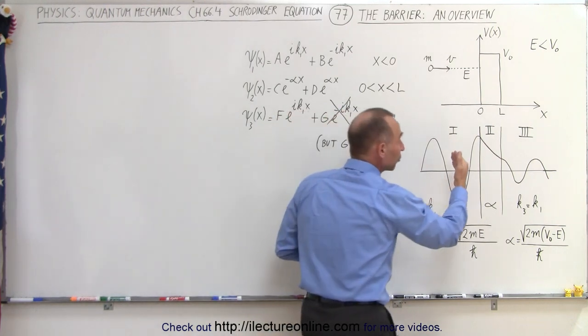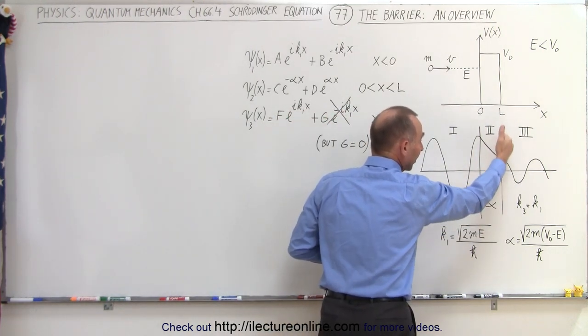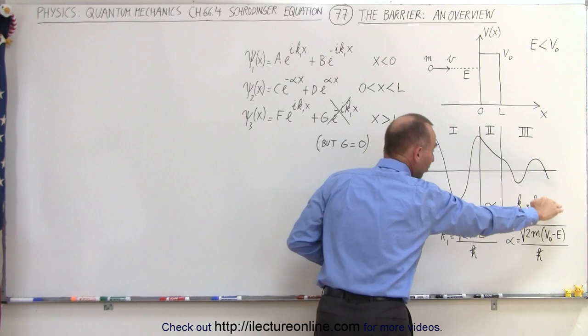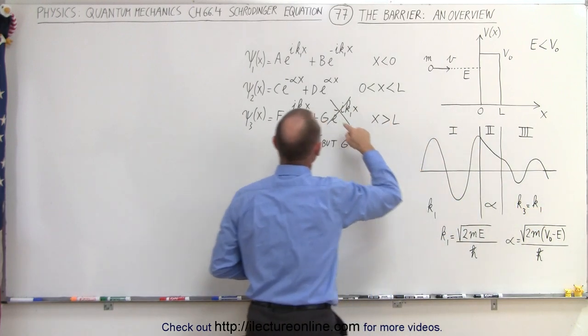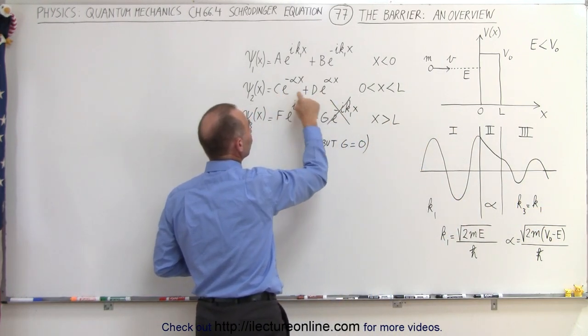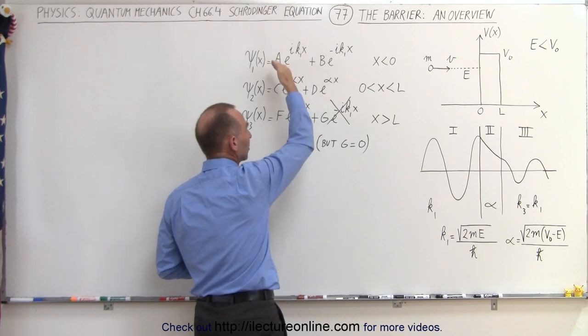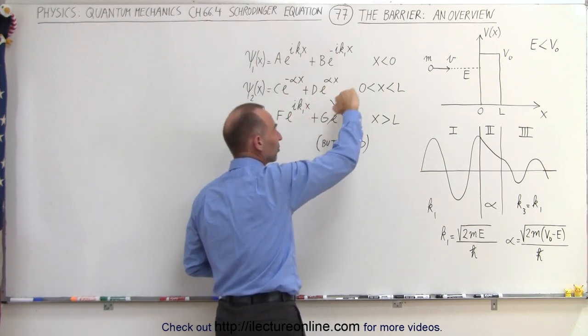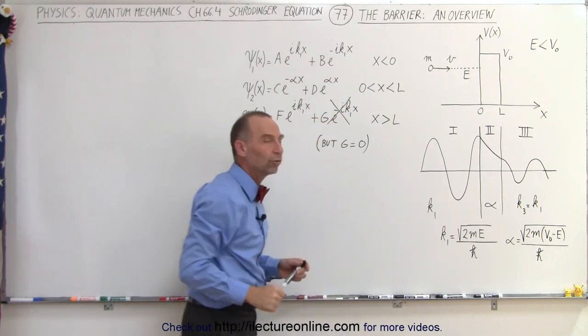Which also means that any particles reflected off the back side of the barrier here, when they go in the other direction, there'll be an exponential increasing function, and that's indicated by these two terms right here. A negative for exponential decay, a positive for exponential increase moving from right to left.